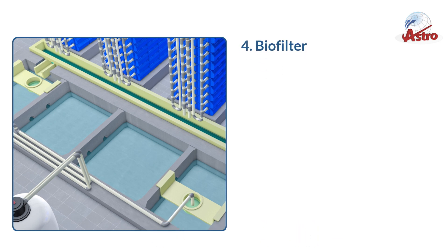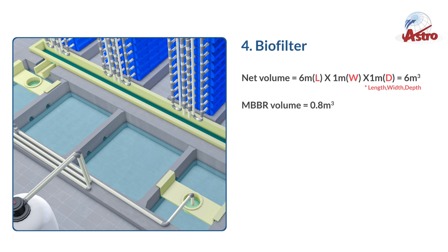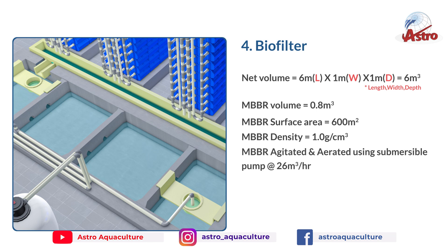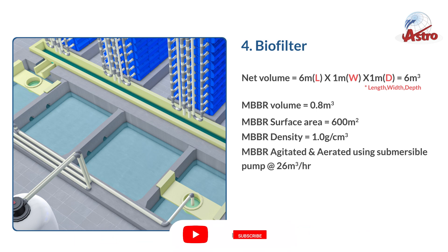Biofilter — net volume equals 6 meters length × 1 meter width × 1 meter depth, equals 6 cubic meters. MBBR volume equals 0.8 cubic meters. MBBR surface area equals 600 square meters. MBBR density equals 1.0 grams per centimeter cubed. MBBR is agitated and aerated using a submersible pump at 26 cubic meters per hour.